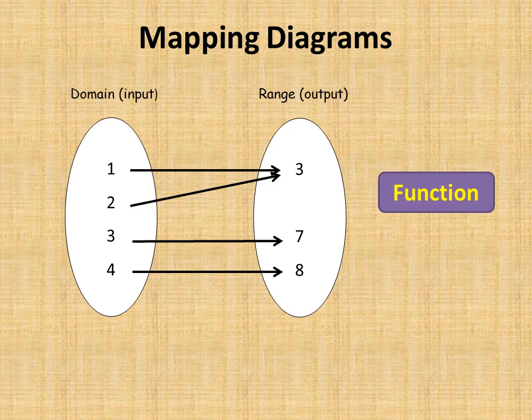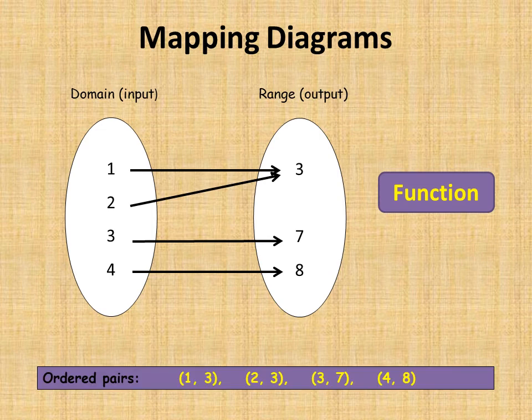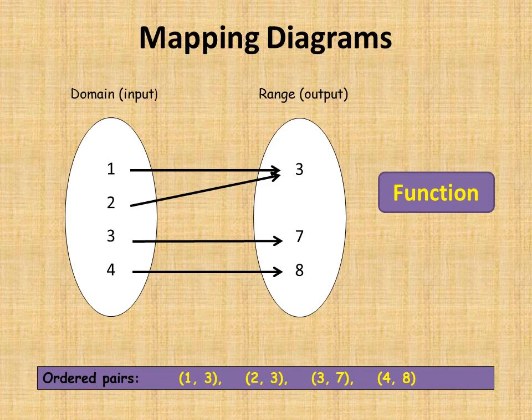Try this one on your own — pause the video, have a go, then return. The answer: one is matched to three, so (1, 3); two is mapped to three, so (2, 3); three is mapped to seven, so (3, 7); and four is mapped to eight, so (4, 8).